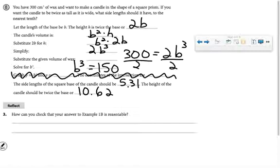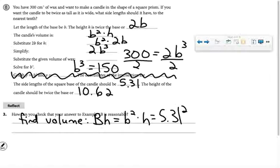And then it says, how can we check to make sure that our answer is reasonable? Well, we can find the volume. Okay, so capital B times H. That'll be B squared times H. It would simplify to 5.31 squared times 10.62. Do I get really stinking close to 300? Let's see. I get approximately 299.8. I think I am maximizing the use of the 300 cubic centimeters of wax that I was given.